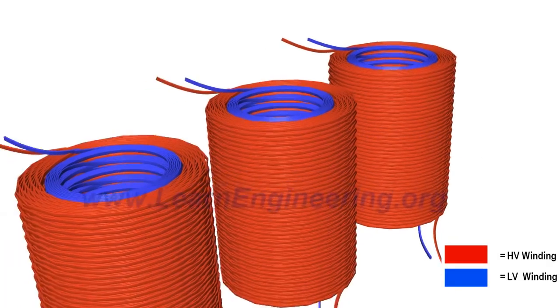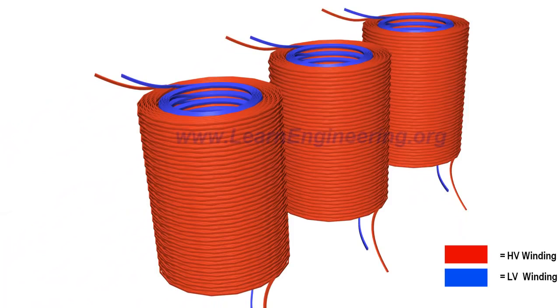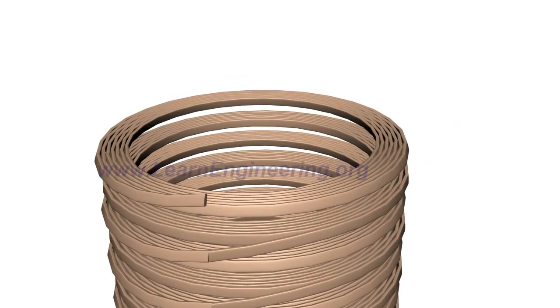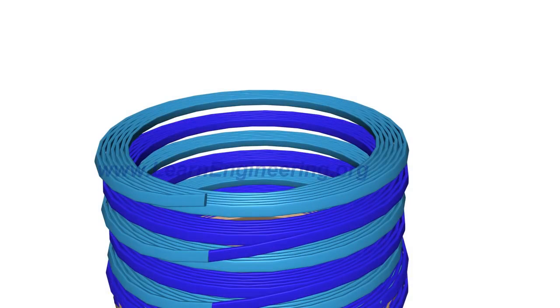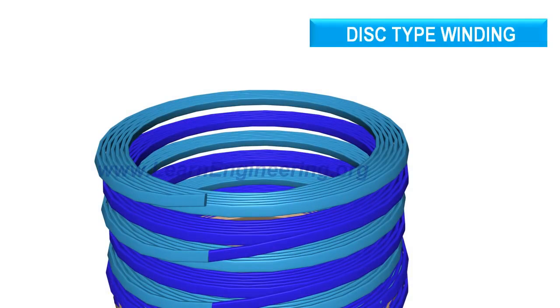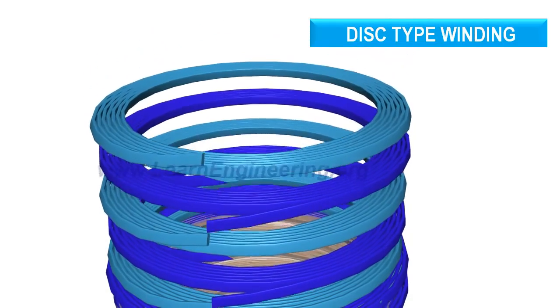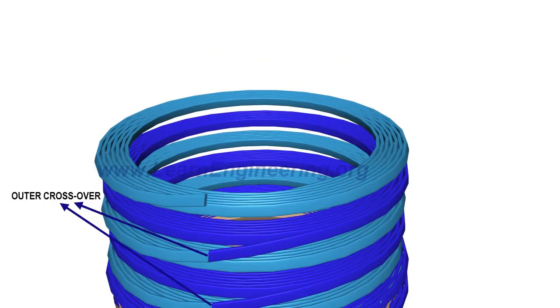Two more such windings are employed in a three-phase transformer. Transformers with high power ratings generally employ a special kind of winding known as disc-type winding, where separate disc windings are connected in series through outer and inner crossovers.